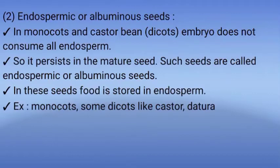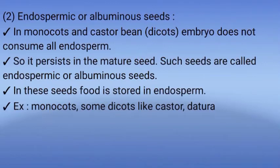The second type is endospermic or albuminous seeds, found mostly in monocotyledonous and some dicotyledonous plants like castor bean. The embryo does not consume all the endosperm — it persists in the mature seed. Such seeds are called endospermic or albuminous seeds, and food is stored in the endosperm.